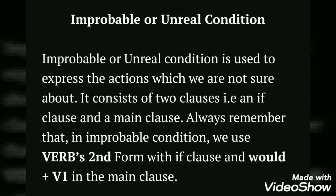Let's move on to the second condition — improbable or unreal condition, also called doubtful condition. These are if-sentences about actions we are not sure about. It consists of two clauses: if-clause and main clause. Always remember that in improbable condition, we use the verb's second form in the if-clause, and 'would plus V1' in the main clause. You can also use 'could plus V1' or 'might plus V1' depending on the mood of the speaker. This condition uses only past tense forms.